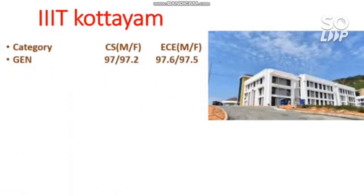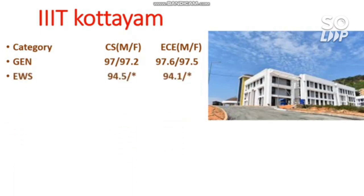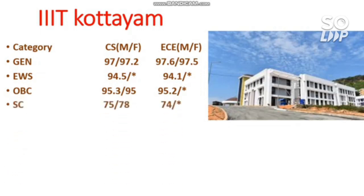IIIT Kota has male and female cutoffs available. For General: CS requires 97 for male and 97.2 for female; EC requires 97.6 for male and 97.5 for female. For EWS: 94.5 with no seat reserved for females. For OBC: CS requires 93.5 for male and 95 for female; EC requires 95.2. Wherever star marks appear, that category is not reserved.